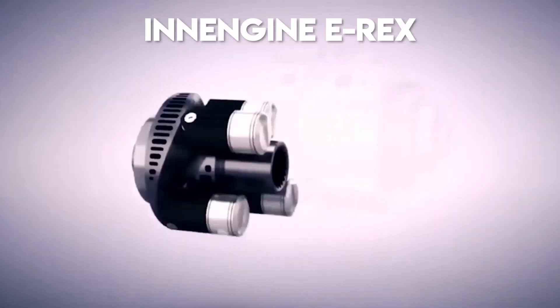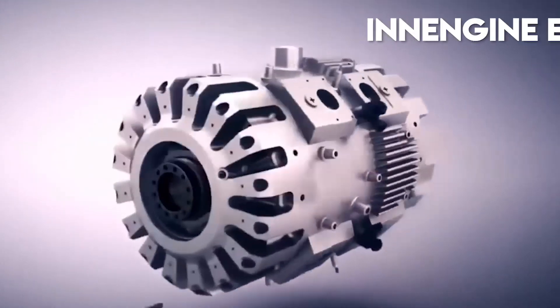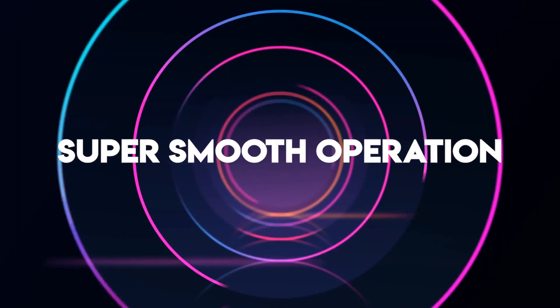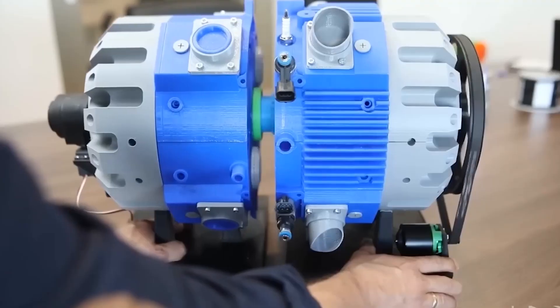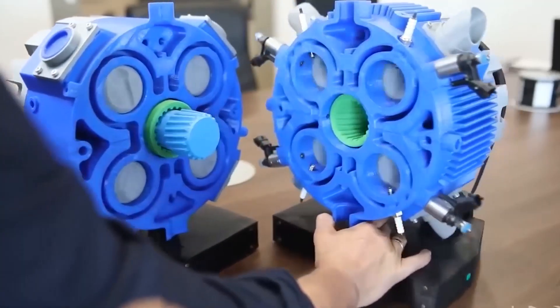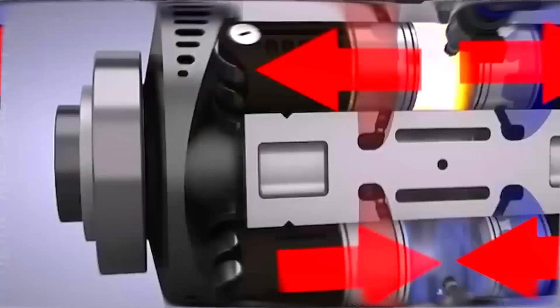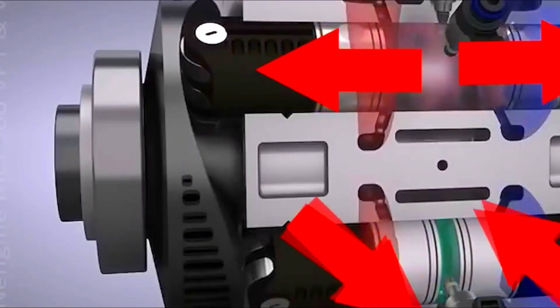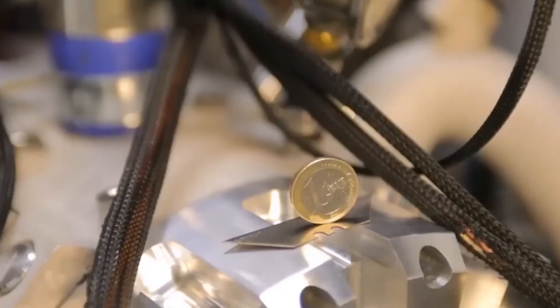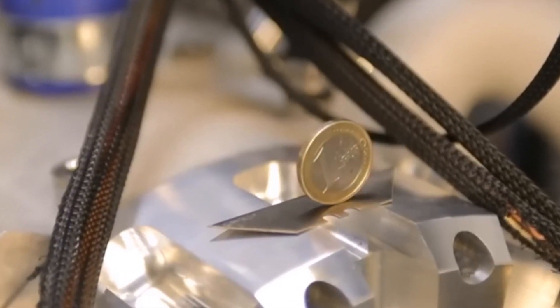The InGen E-REX boasts several compelling features that set it apart as an innovative internal combustion engine. First, super smooth operation. The E-REX engine achieves exceptional smoothness due to perfectly balanced reciprocating masses and combustion forces acting equally in both directions. This balanced design minimizes vibrations, as demonstrated by a coin balancing on the end of the engine, as shown on the website.